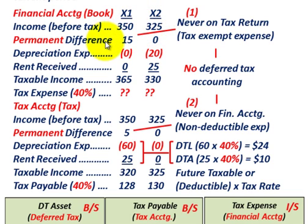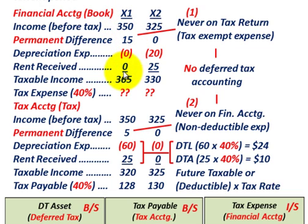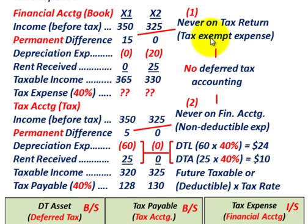What we really want to concentrate on is these permanent differences. For financial accounting or book accounting purposes, in year X1 we're going to have a permanent difference of $15,000. This permanent difference for financial accounting is never going to be reported or recorded for tax accounting purposes — that's case one, where it's never on the tax return. It's only recorded for financial accounting, and it could be like a tax expense.